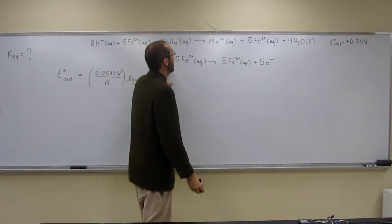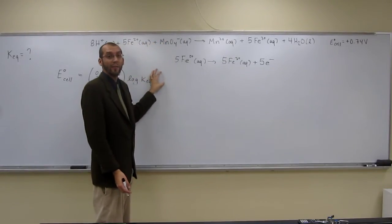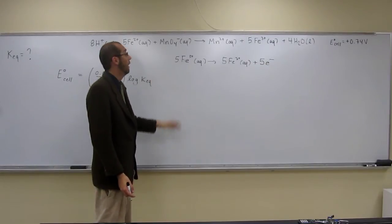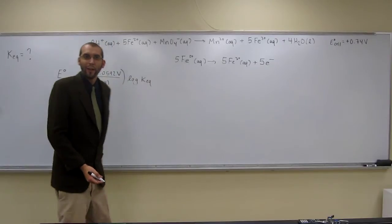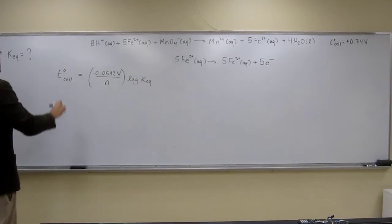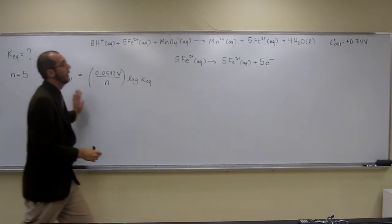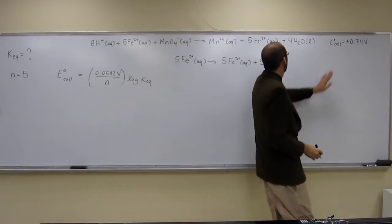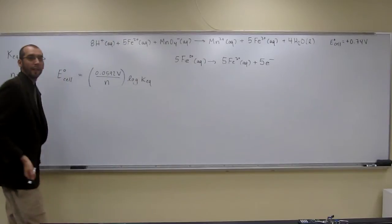So, if you did the other half reaction, you would find that we'd be adding 5 electrons here. We don't have time to do that right now though. So, let's just write down our n equals 5 there. We have our e-cell that's given to us up here. We have our n now. We just don't have keq.